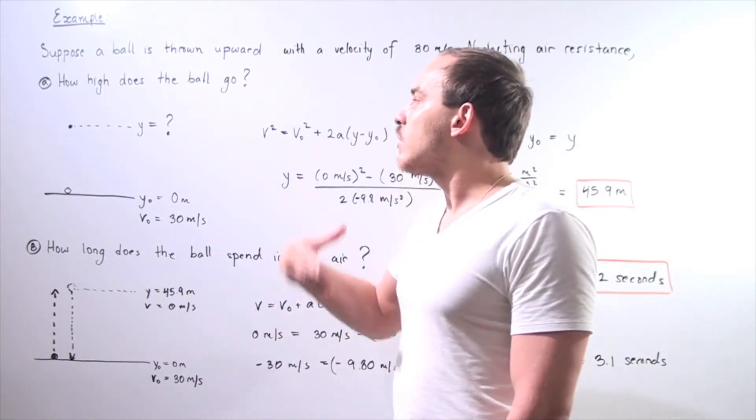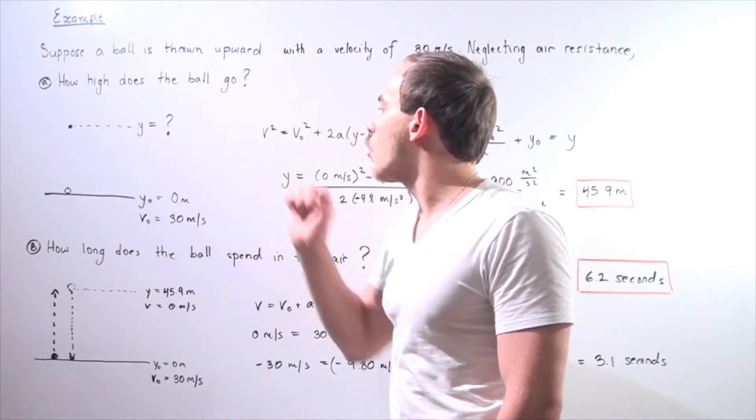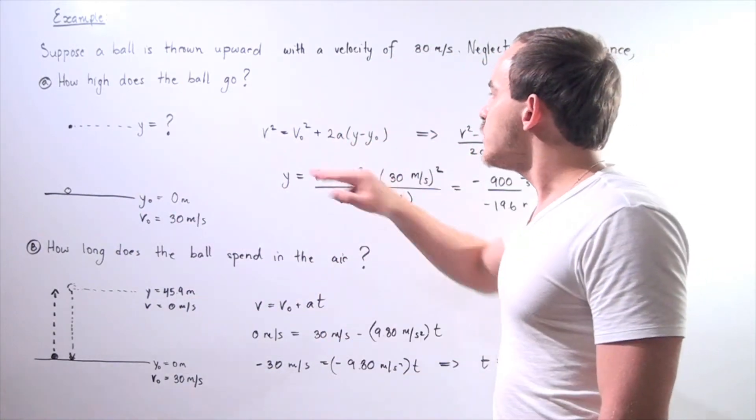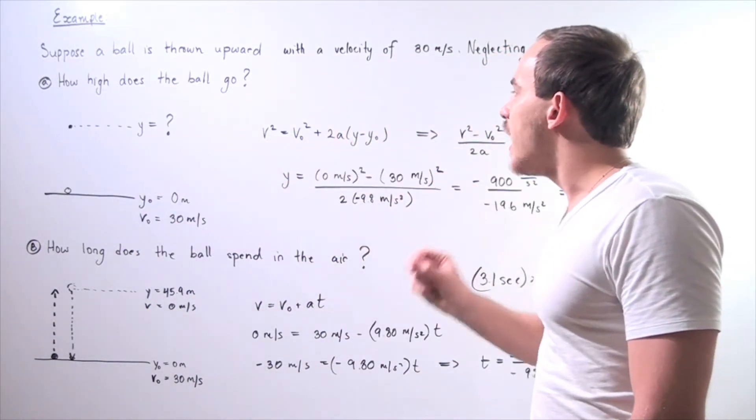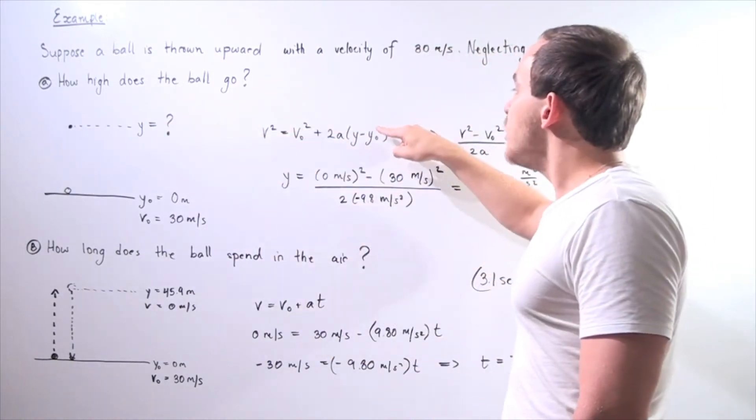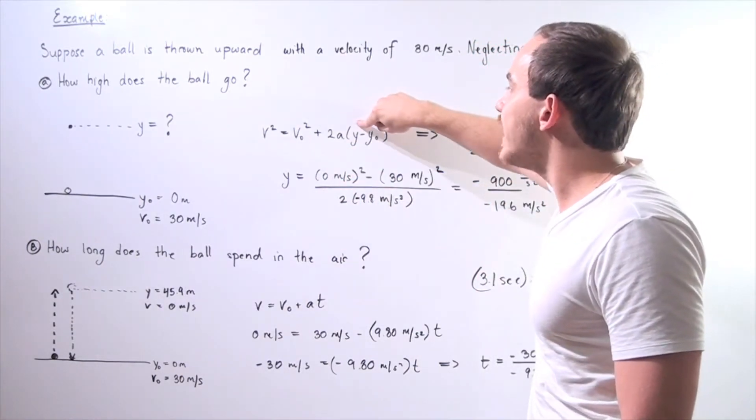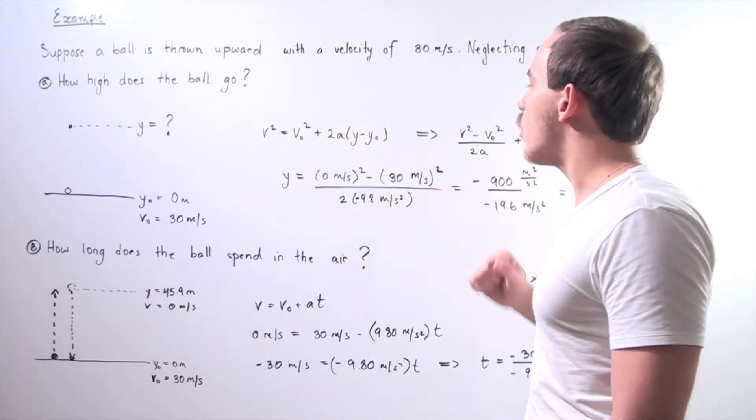Notice our velocity is pointing upward along the y-axis, and our acceleration is pointing downward. So that means our acceleration is negative. Our object is actually decelerating as it's traveling upward. So let's use the following formula to find our final position y, because we know every single variable here beside the y, and we want to find it.